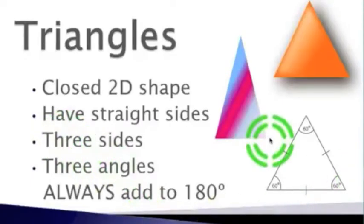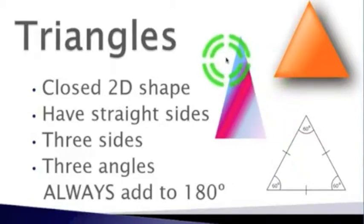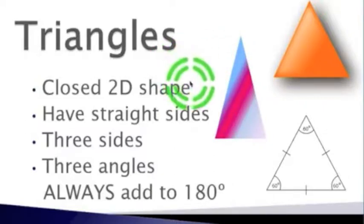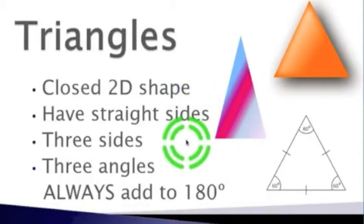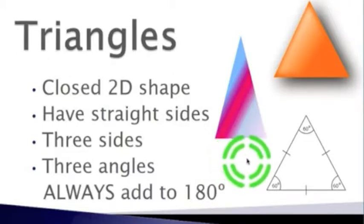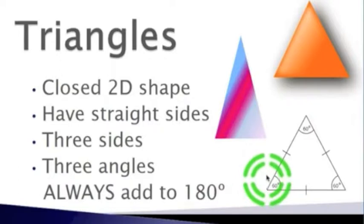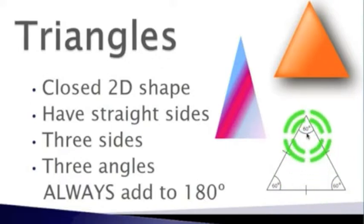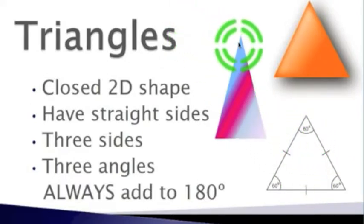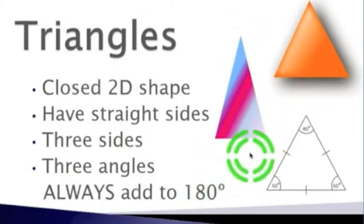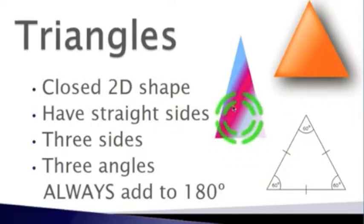The next type of geometry we are going to discuss are triangles. Triangles are any closed two-dimensional shape that has straight sides. They always have three sides and three angles that add up to 180 degrees. It does not matter whether one angle is much smaller than another — they will always add up to 180 degrees and always have three sides.